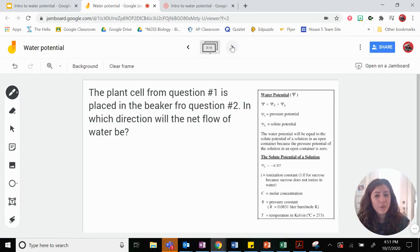The plant cell in question number one is placed in the beaker from question number two. In which direction will the net flow of water be? Okay, so now we're going to have to apply that knowledge. So when you do these questions, anytime you do any osmosis questions, I always recommend you draw a picture. I know sometimes you're like, I don't need to draw a picture. Just draw the picture. It'll take two seconds, and then you'll be organized and you'll never make a silly mistake.